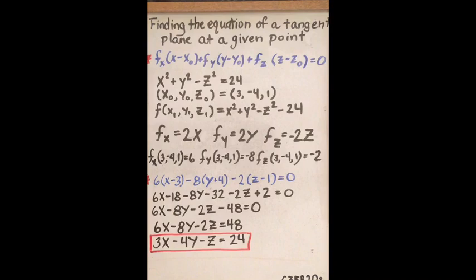Now we put the values into the formula that we were given above, multiply it out, and set it equal to 0. Then for convenience, we go ahead and simplify the answer by dividing everything by 2. That's your answer.